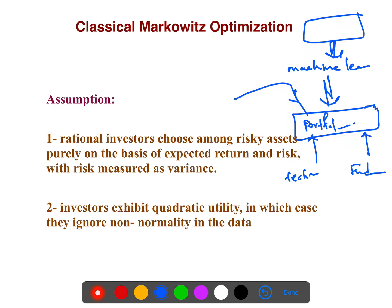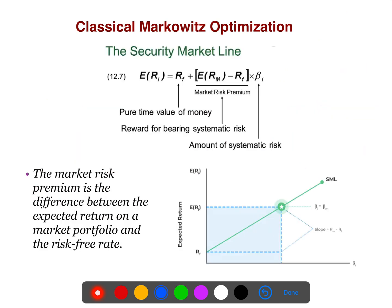That is the beauty and the abstraction of Black-Litterman. The classical Markowitz assumption is based on the idea that rational investors choose among risky assets purely on the basis of expected return and risk, with risk measured as variance. Investors exhibit quadratic utility, in which case they ignore non-normality in the data.